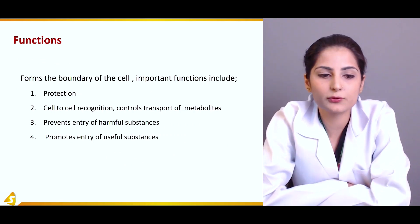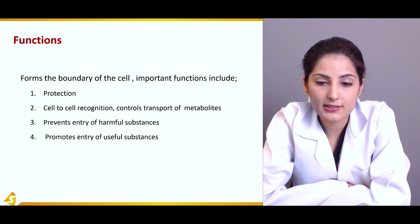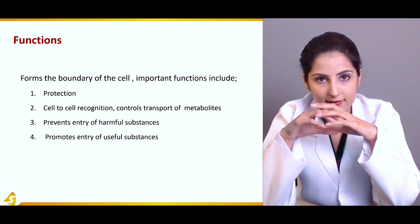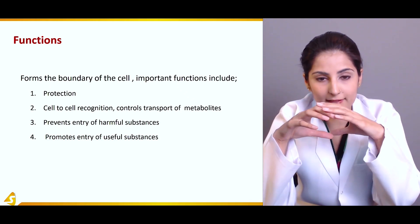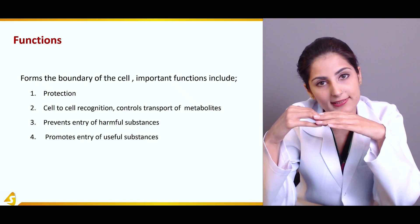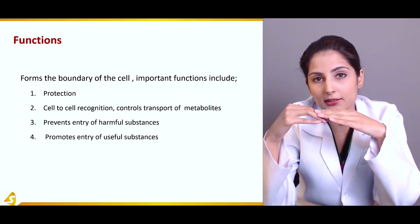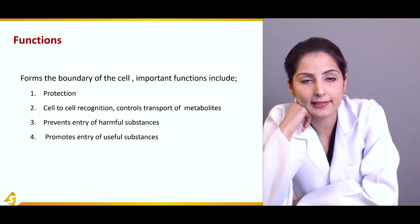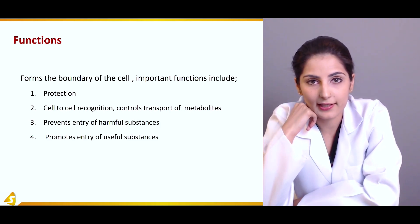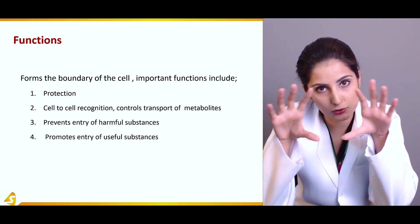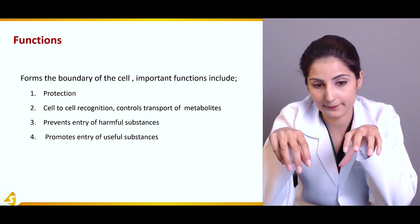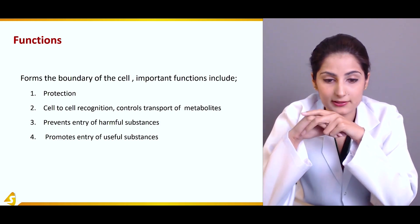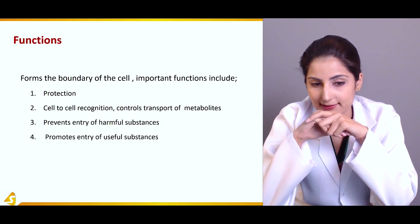Now we will review the functions. The first and foremost important function would be protection. The cell membrane is like a door — it will not allow harmful substances to enter the cell, but will allow the important molecules that are needed by the cell, like glucose, and oxygen, while carbon dioxide needs to go out. So it provides protection, cell-to-cell recognition, and it controls the transport of metabolites.